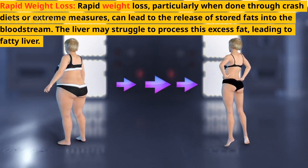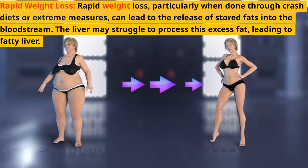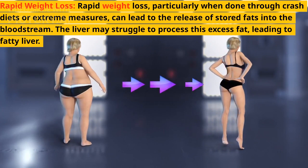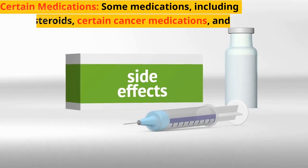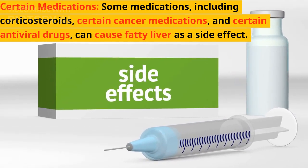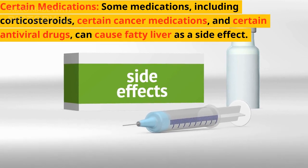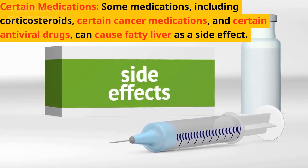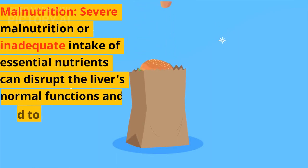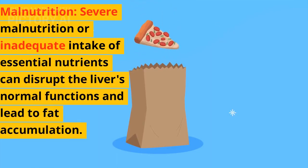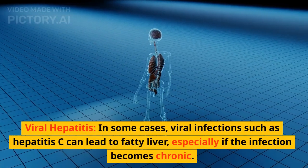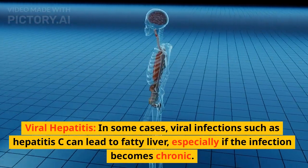Rapid weight loss, particularly through crash diets or extreme measures, can lead to the release of stored fats into the bloodstream, and the liver may struggle to process this excess fat, leading to fatty liver. Certain medications, including corticosteroids, certain cancer medications, and certain antiviral drugs, can cause fatty liver as a side effect. Malnutrition or inadequate intake of essential nutrients can also disrupt the liver's normal functions and lead to fat accumulation.